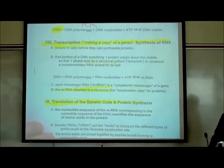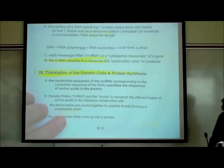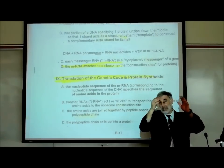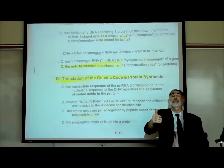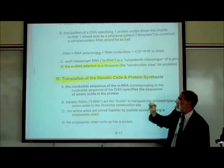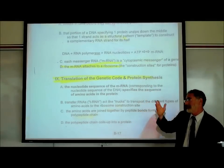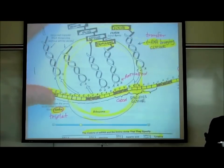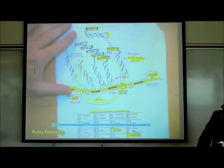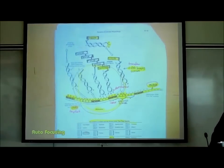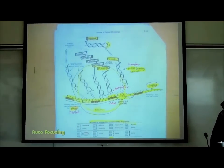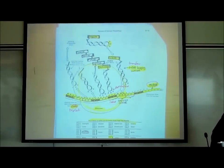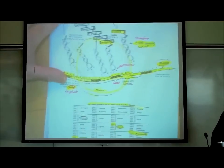Now that the messenger RNA is attached to the ribosome, we can talk about how that copy of the gene for making insulin is going to be translated into building a protein. On page B18 is an enlarged view of the ribosome — those little granules of granular rough ER. The ribosome is made up of two parts: a larger part and a smaller part. It's actually made up of a type of RNA known as ribosomal RNA, and some proteins. It kind of acts like a clamshell.